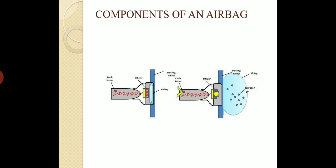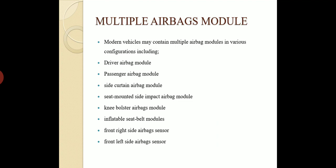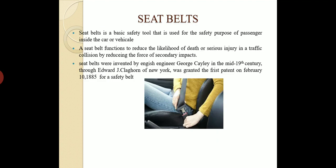Components of airbags are shown in the figure. When we are in a vehicle and a sudden accident occurs, the airbag will open and protect the person. There are multiple airbag model types: driver airbag module, passenger airbag module, side curtain airbag module, seat-mounted side impact airbag module, knee bolster airbag module, inflatable seat belt airbag module, front right side airbag sensors, and front left side airbag sensors.